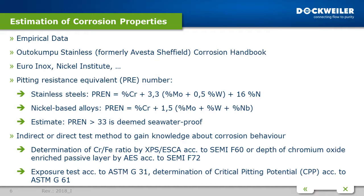One resource is the Outokumpu Stainless Corrosion Handbook, formerly the Avesta-Sheffield Corrosion Handbook, where you will find nearly every basic definition of corrosion types and tables of different media, compositions, concentrations, and temperatures for 17 stainless steel and nickel alloys. The Euro INOX is the European Stainless Steel Development Association, an online library covering properties and applications of stainless steel. The Nickel Institute is the global association of the world's primary nickel producers — most outside China — and contains extensive information on nickel and nickel alloys.